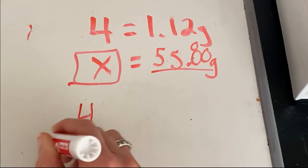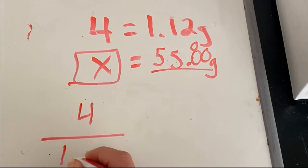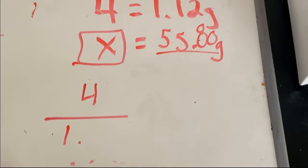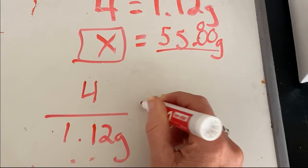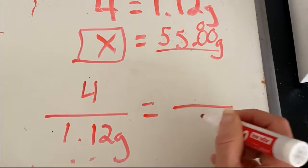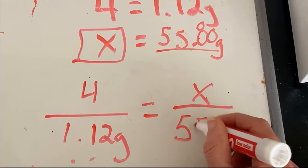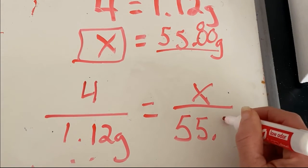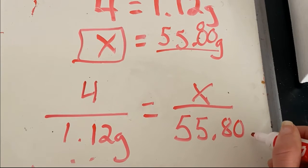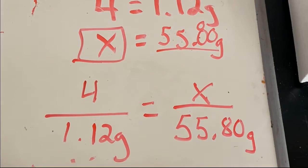Four noodles has a mass of 1.12 grams. And that will be equivalent to how many of our noodles are in the bag to give me a mass of 55.80 grams.